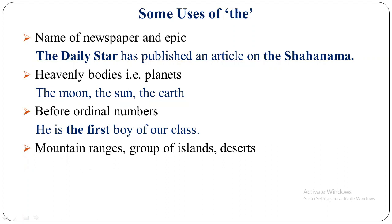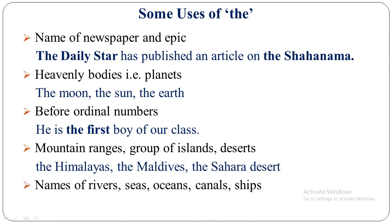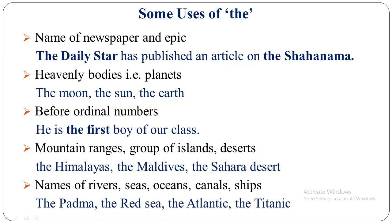Mountain ranges — not a single mountain — and groups of islands — not a single island. For example, the Himalayas, the Maldives, the Sahara Desert, and the West Indies. Name of rivers, seas, oceans, canals, ships: for example, the Padda is the name of a river, the Red Sea is the name of a sea, the Atlantic is the name of an ocean, and the Titanic is the name of a ship. So we must use THE before all these kinds of nouns.